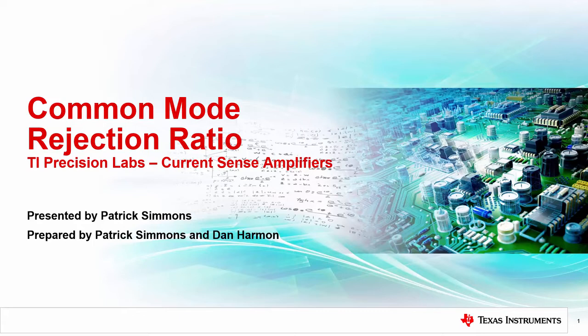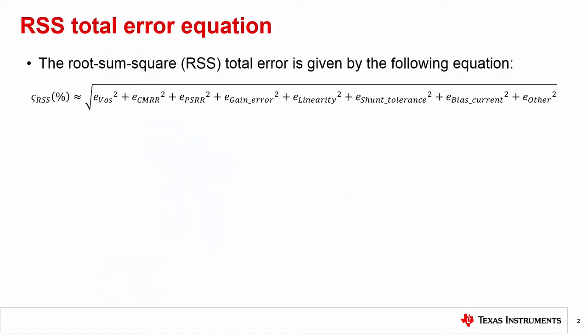In previous videos, we introduced the root sum of squares, RSS, which is a total error equation for current sense amplifier circuits, as shown here. This video will focus on the error from common mode rejection, CMRR.